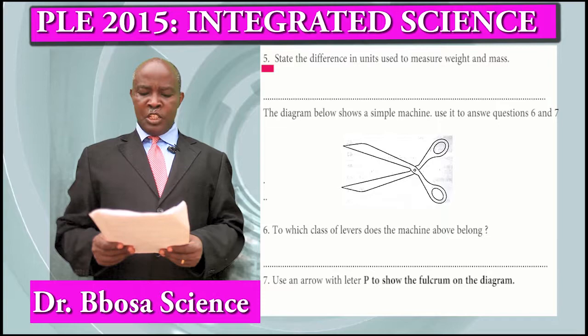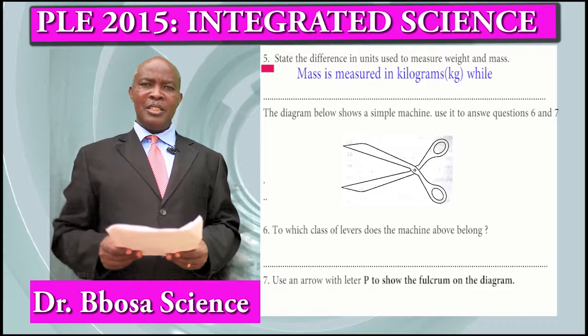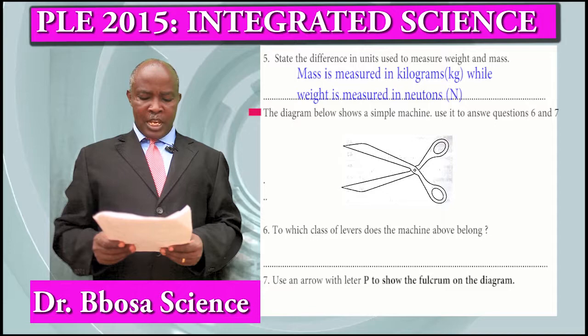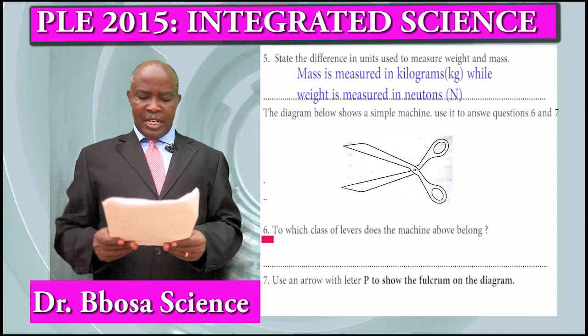Question 5: State the difference in units used to measure weight and mass. Mass is measured in kilograms. Weight is measured in newtons.